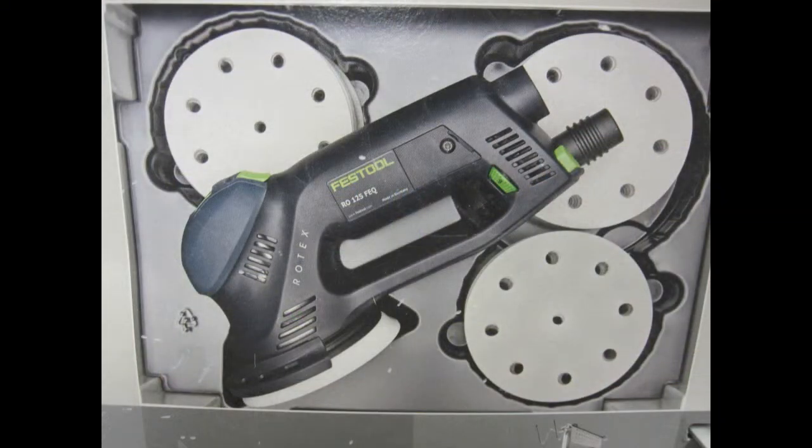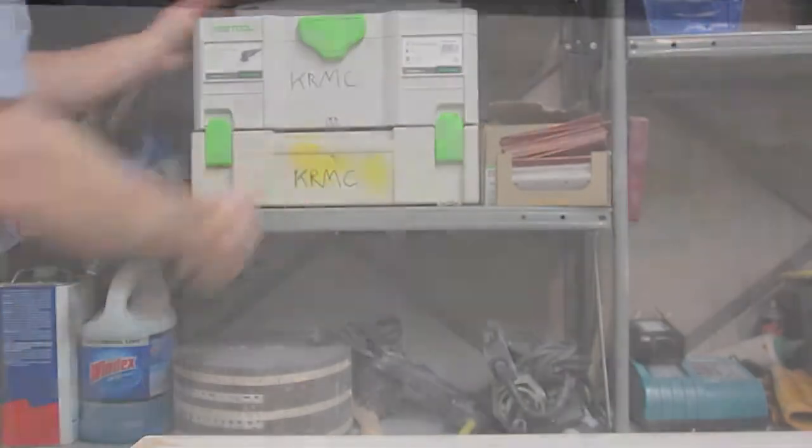The tool comes with a sustainer that houses the tool and an ample supply of abrasives. The sustainer clips to other sustainers for convenient compact storage. The R0125 is the perfect tool for finishing solid surface seams.